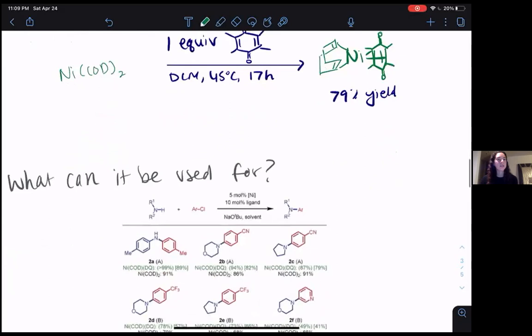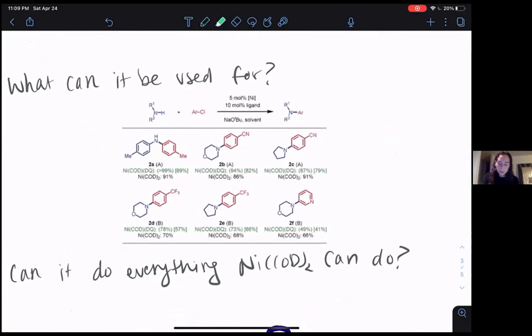What can nickel cod DQ be used for? Well, here is an example. If we look below on this figure, we've shown the comparison of nickel cod with nickel cod DQ for a variety of reactions. All of these reactions are taking an N-H and an aryl chloride and converting it to an N-Ar bond. These products are shown here.